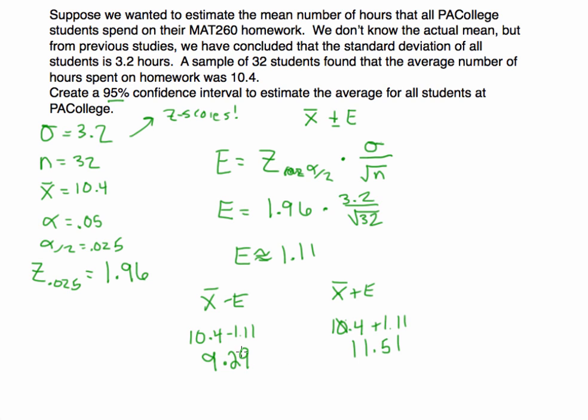So in this case, we would estimate that the true population parameter - in this case the population mean. We would say we are 95% confident that the true mean for the population, the mean number of hours spent by all students, is between 9.29 and 11.51.